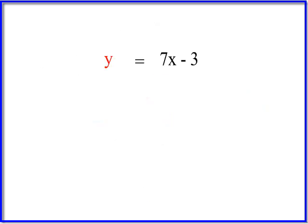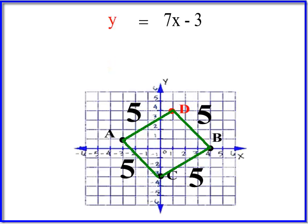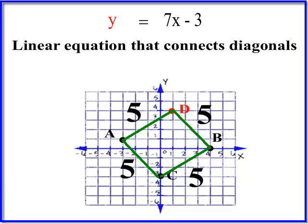So, without going into a lot of explanation here, this is a linear equation that connects the diagonals of this square. In other words, this is the equation to the line that goes through this point, 0 negative 3, and whatever D is. That kind of makes it a whole lot easier.